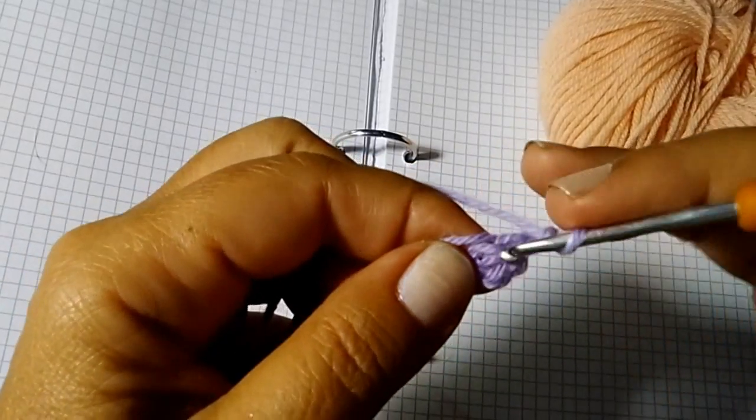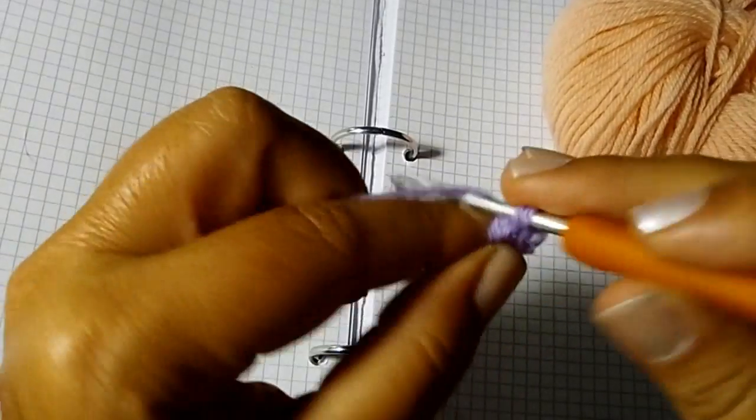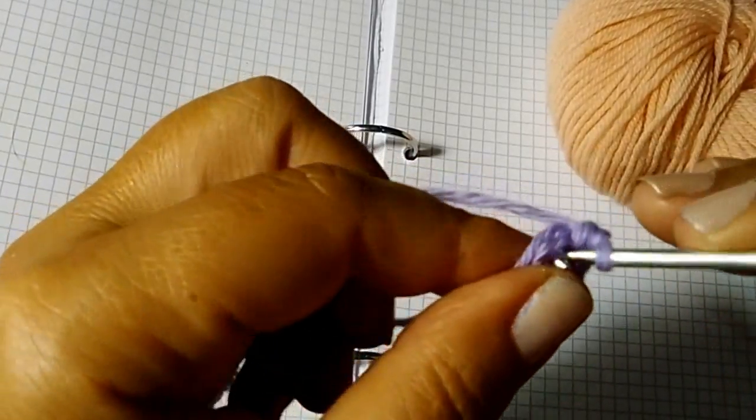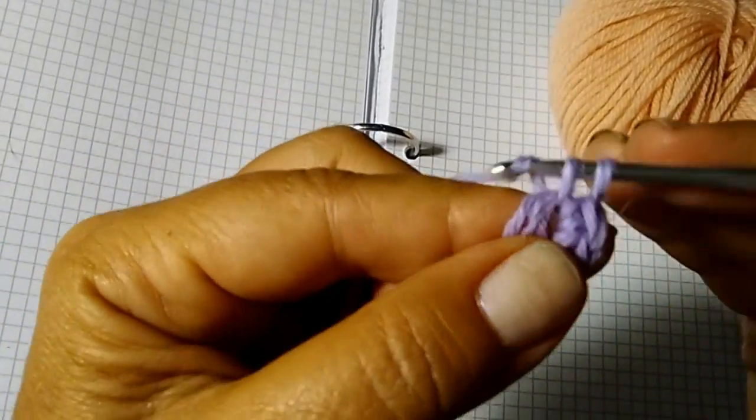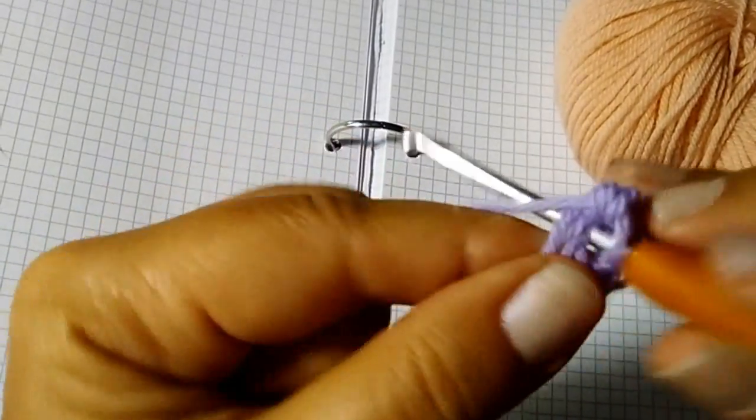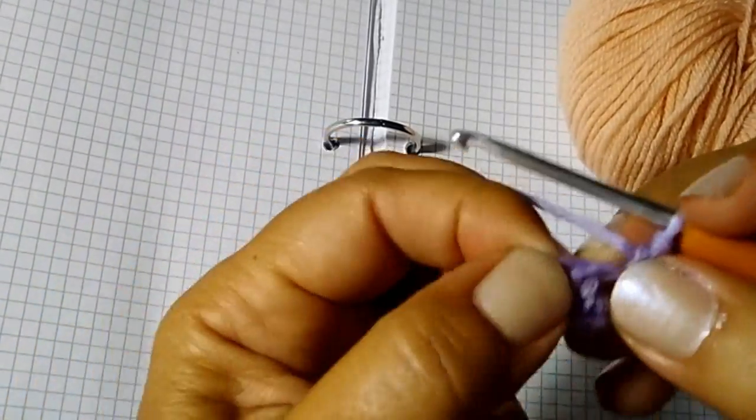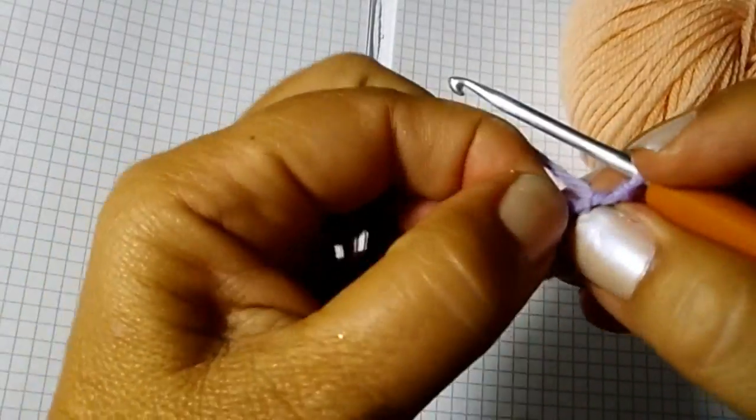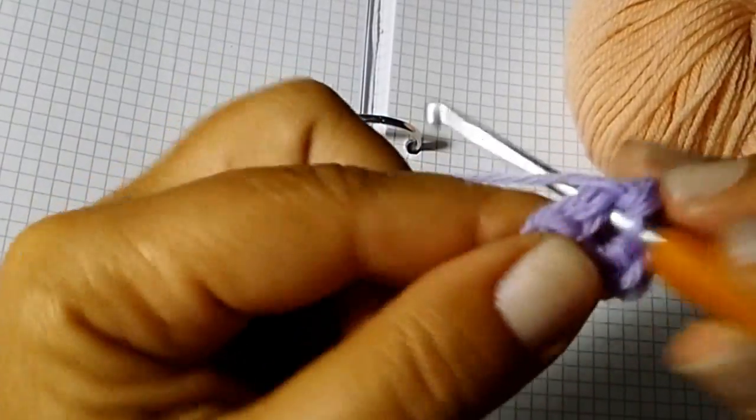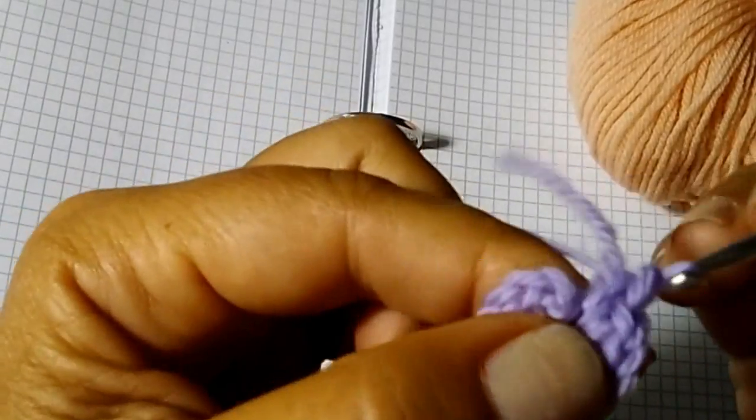Now make 12 single crochet stitches: 1, 2, 3, 4, 5, 6, 7, 8, 9, 10, 11, 12.